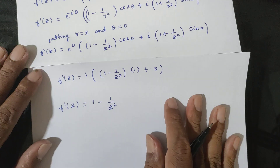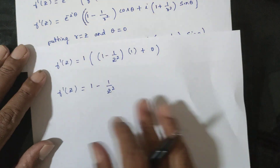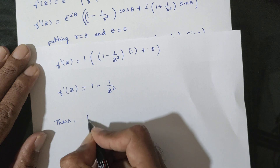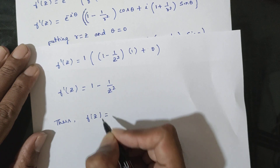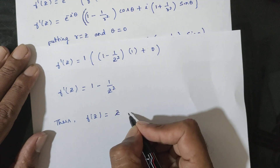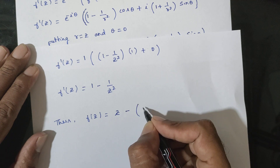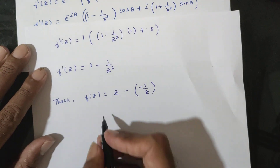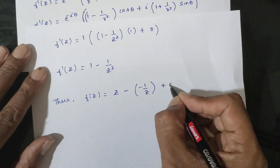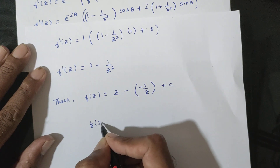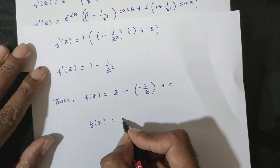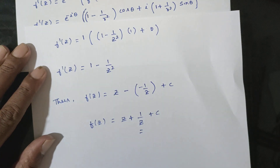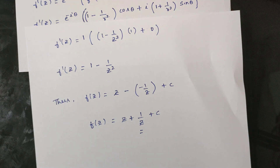Integrating f'(z) = 1 - 1/z²: the integration of 1 gives z, and the integration of -1/z² gives +1/z. Therefore the final answer is f(z) = z + 1/z + c.